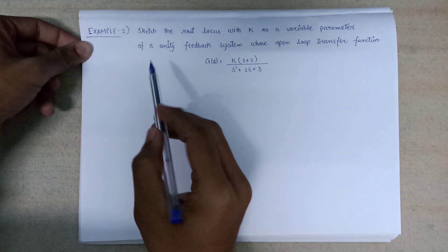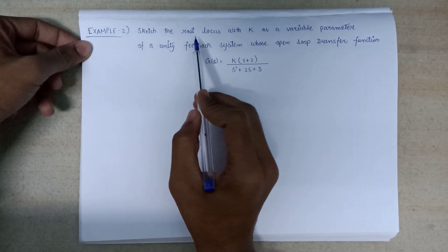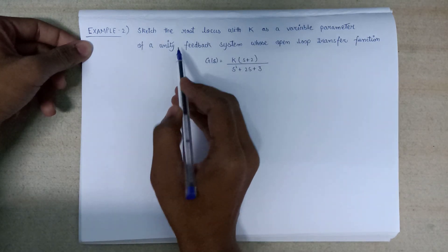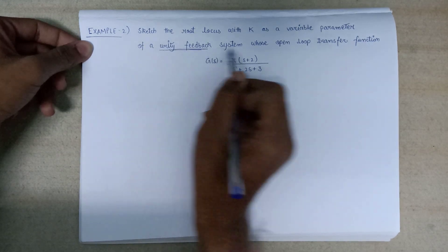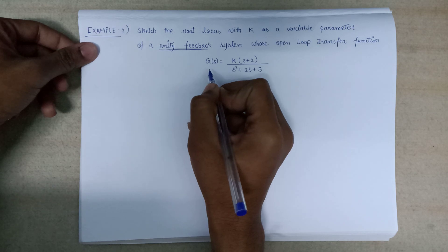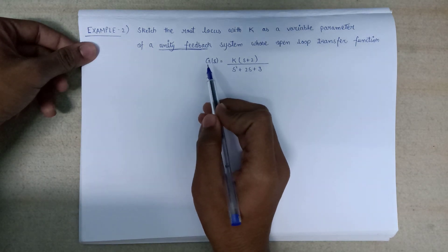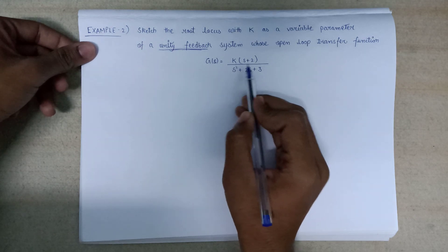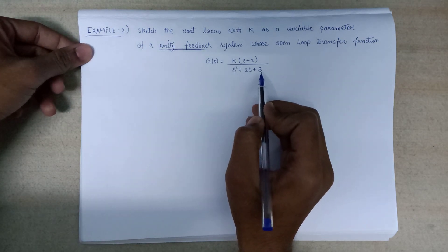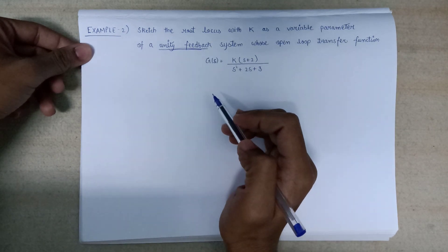In this example, we need to sketch the root locus with k as a variable parameter of a unity feedback system whose open loop transfer function G(s) is given as k over s² plus 2s plus 3. In this question, we need to plot a root locus.